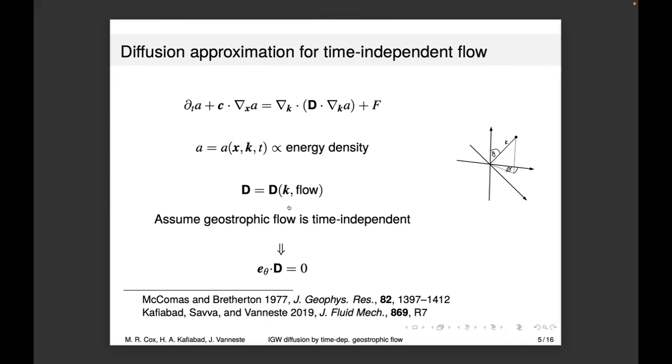This was first introduced by McComas and Bretherton, and then Jacques, Hossein, and Myles Savva re-derived this using matched asymptotics. They make the assumption that the geostrophic flow is time independent because it's so much slower than the inertial gravity waves. With this assumption, the diffusivity is orthogonal to the vertical angle, meaning no diffusion of energy in that direction. Because the dispersion relation depends only on this angle, the constant frequency surface is a cone. They predict that energy only diffuses along a cone of constant frequency in wave vector space.